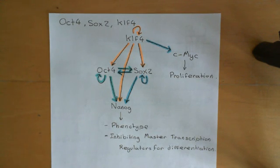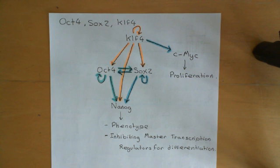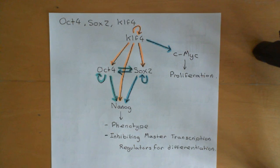Welcome back to this next video discussing embryonic and induced pluripotent stem cells. In the previous video, we saw that what confers the specialization of a cell is the combination of master transcription regulators it has. Each different specialized cell type has a combination of master transcription regulators that keeps it as that cell type, controlling epigenetics, and therefore the transcriptome, proteome, and phenotype of that cell.